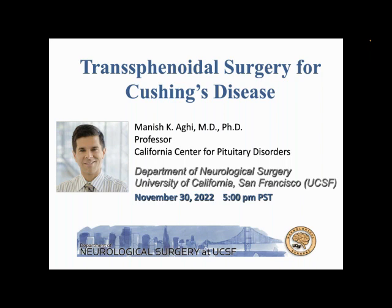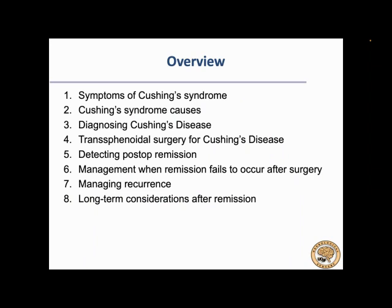I'll be covering a number of things with some brevity. Starting with some of the symptoms of Cushing's syndrome — which includes all causes of hypercortisolemia including Cushing's disease — then talking about some of those causes, then zoning in on Cushing's disease, how we diagnose it, spending a lot of time on surgery, how we detect post-op remission, how we deal with failure to achieve remission, how we manage recurrence after a successful biochemical cure, and some of the long-term health considerations for patients even after they achieve remission.